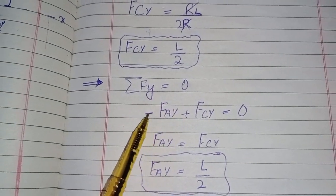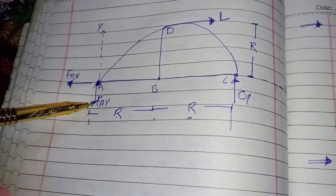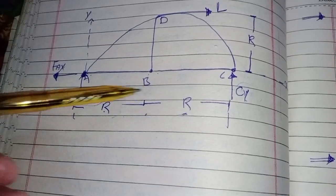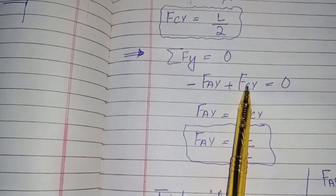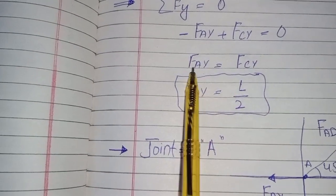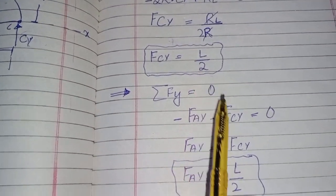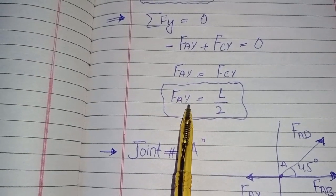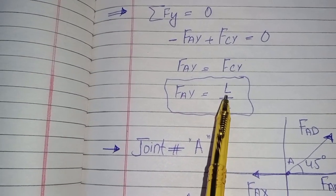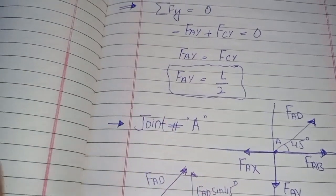From the summation of vertical forces equal to zero, there are two vertical forces: F_ay and F_cy. So positive F_cy minus F_ay equals zero, which means F_ay equals F_cy. Substituting, F_ay equals L divided by 2, so F_ay also equals 0.5L.